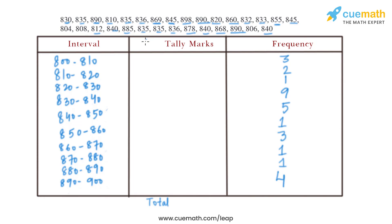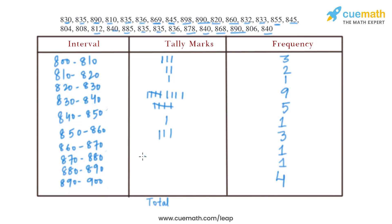Now let's write the tally marks for each interval. The frequencies are: 800–810 is 3, 810–820 is 2, 820–830 is 1, 830–840 is 9 (written as 5 and 4), 840–850 is 5, 850–860 is 1, 860–870 is 3, 870–880 is 1, 880–890 is 1, and 890–900 is 4. Adding all frequencies together gives a total of 30, which is how we complete the frequency table.